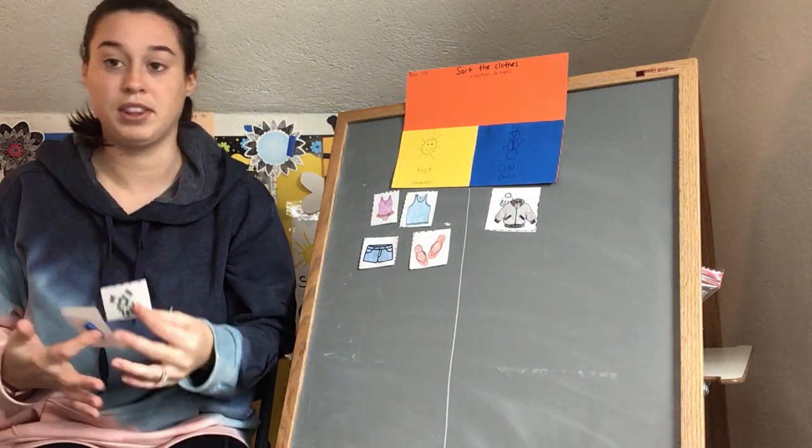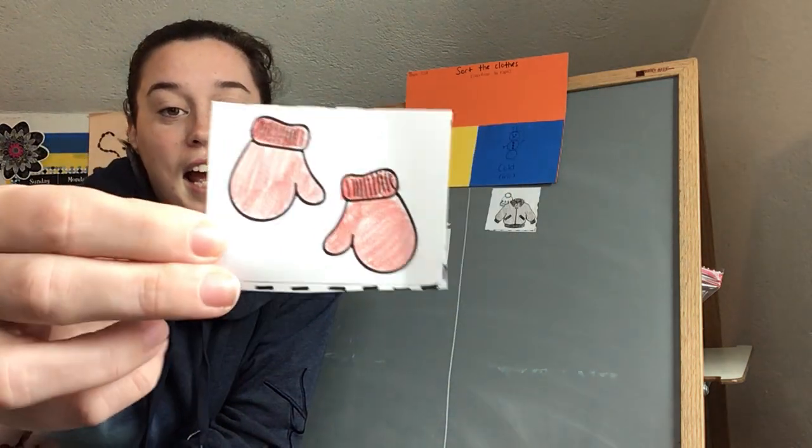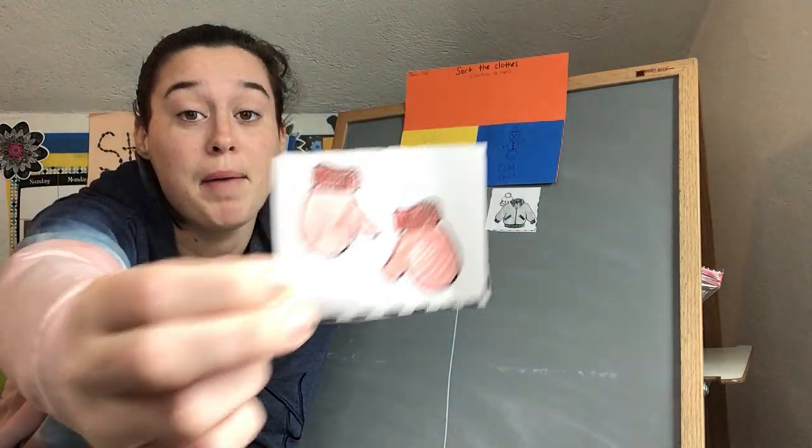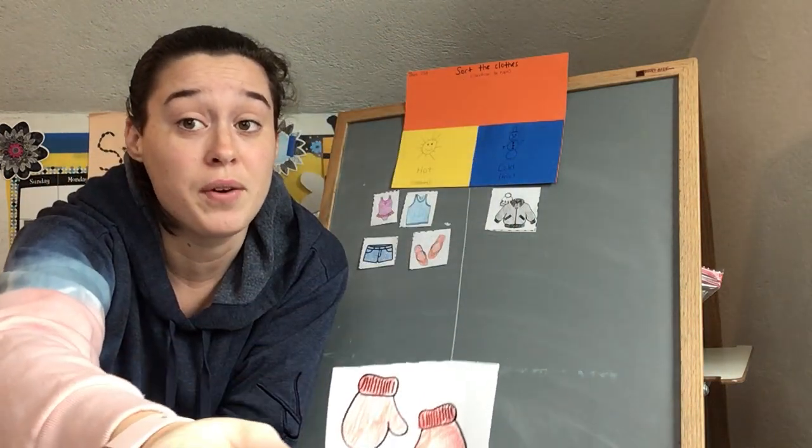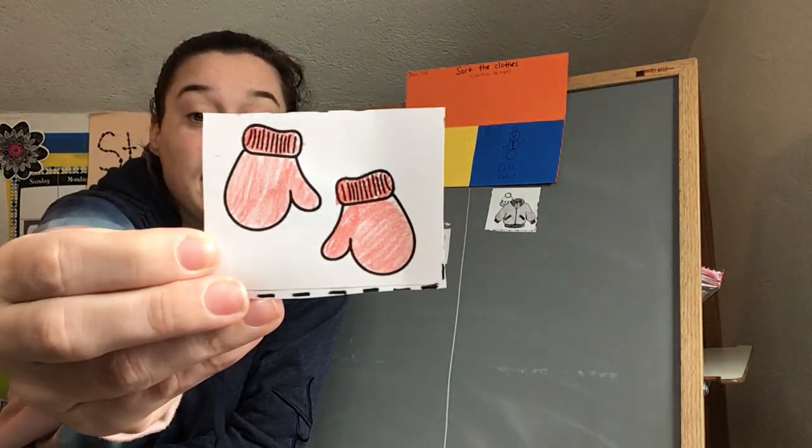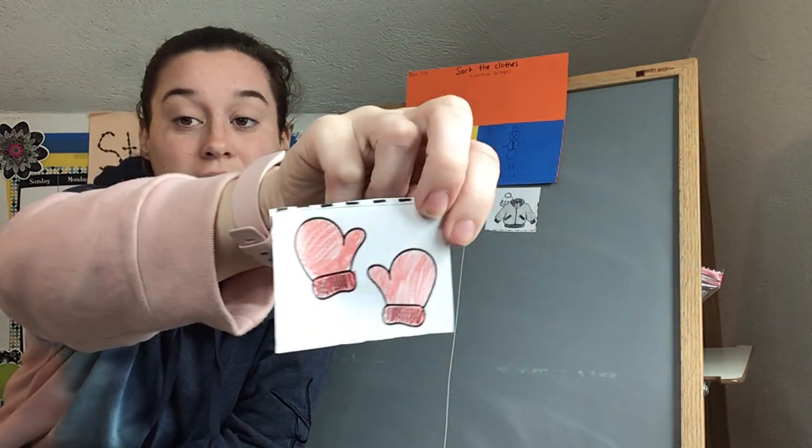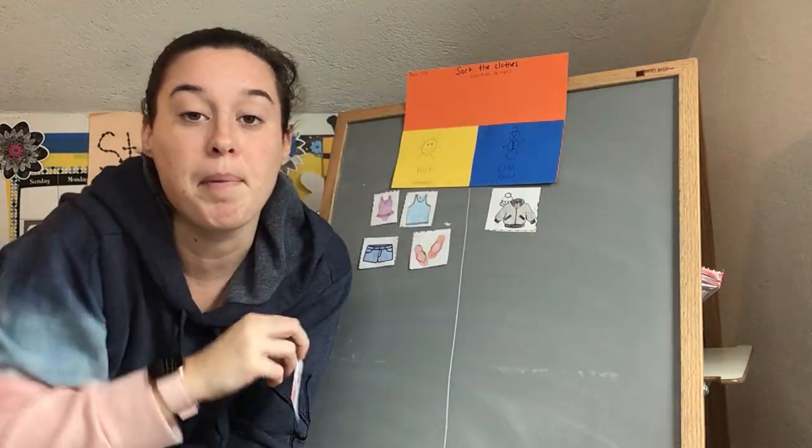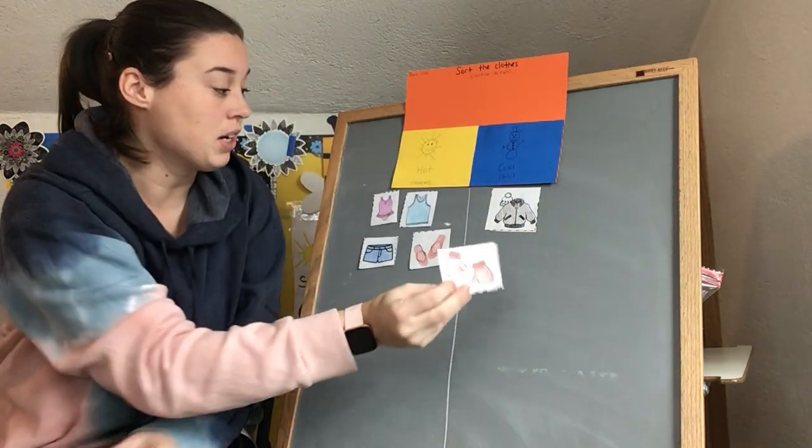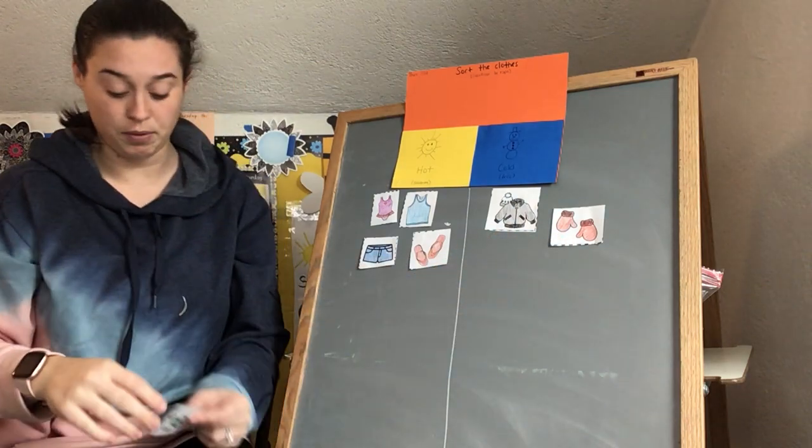Let's keep going. Ooh, these two. Something that Froggy had on to go outside to play in the snow. So if we're talking about putting things on to go in the snow, it must be cold outside, right? So we have mittens. Mittens. They go on our hands to keep our hands nice and warm. So our mittens, friends, are going to go on our cold side along with our jackets.